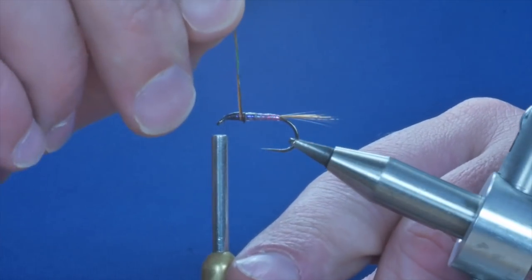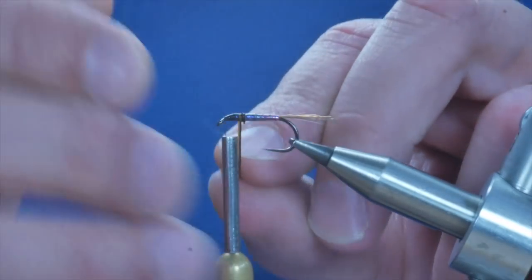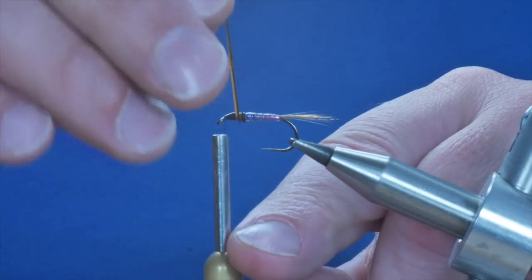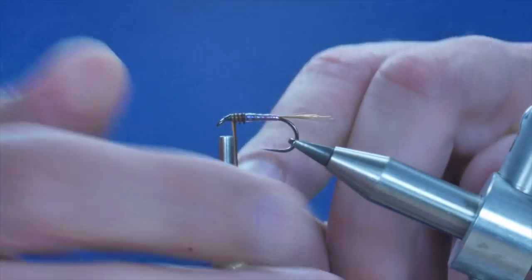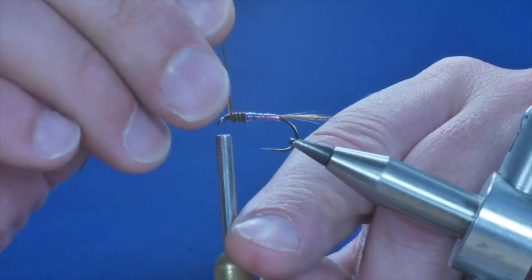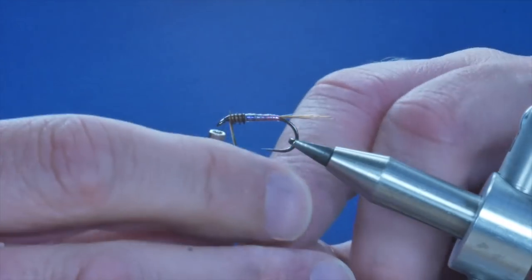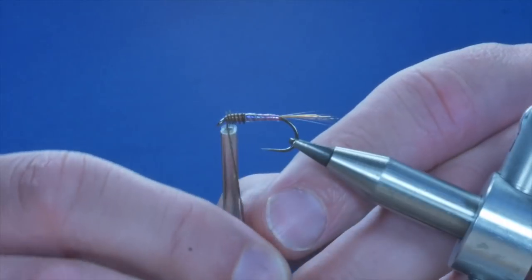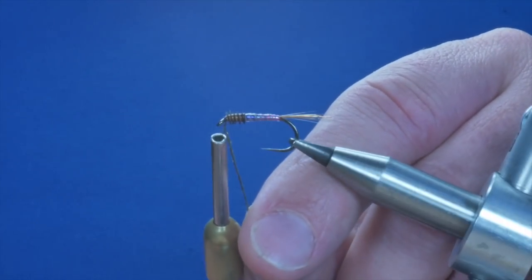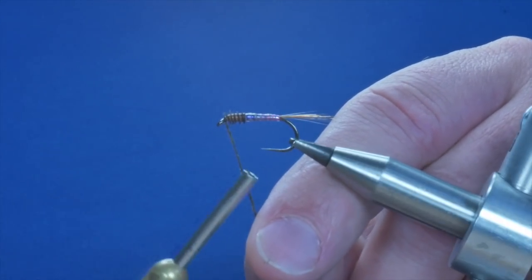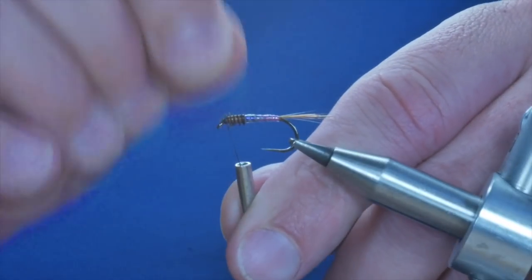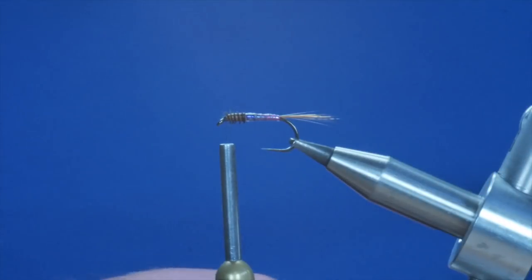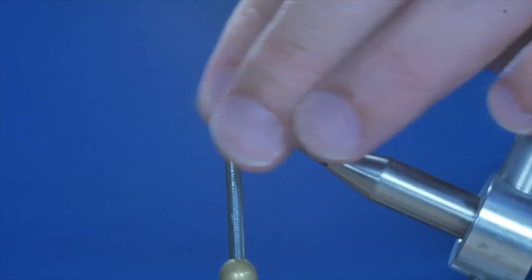And then I can wind on my thorax. Now firstly I'm going to bring it absolutely on top of itself, so that gives me a nice start to the thorax. I'm going to bring it all the way around in touching turns to the front of the hook. Once I've caught that, give it two or three turns and that just snips away really easily. Okay, so far so good.